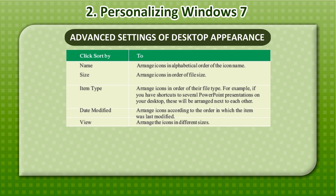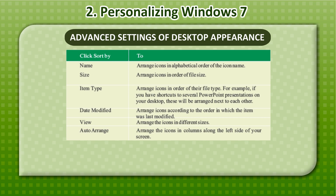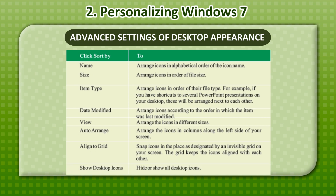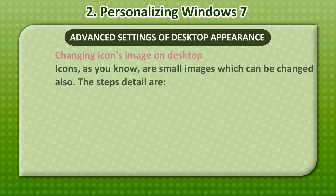View — arrange the icons in different sizes. Auto-Arrange — arrange the icons in columns along the left side of your screen. Align to Grid — snap icons in the place designated by an invisible grid on your screen; the grid keeps the icons aligned with each other. Show Desktop Icons — hide or show all desktop icons.